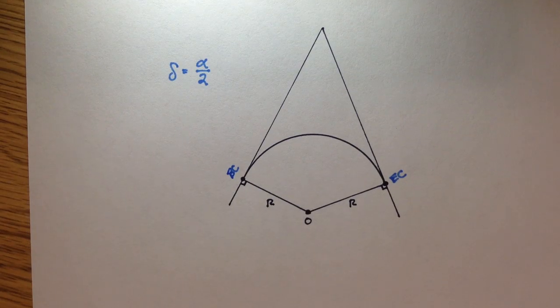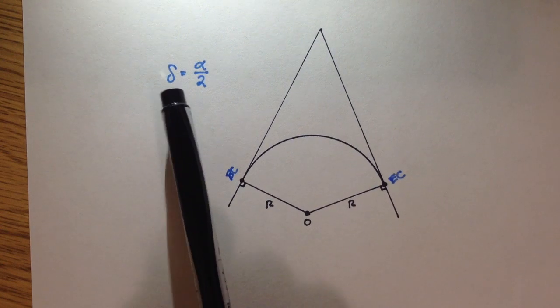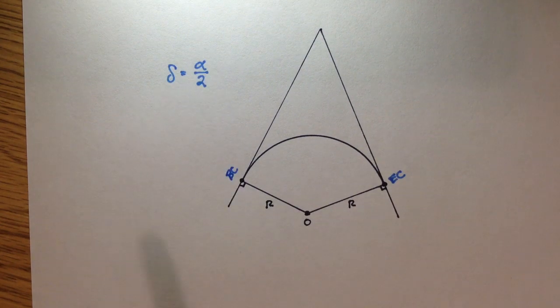Alright, in this video I want to do a quick derivation and prove to you why little delta, which is the deflection angle, is equal to alpha over 2.